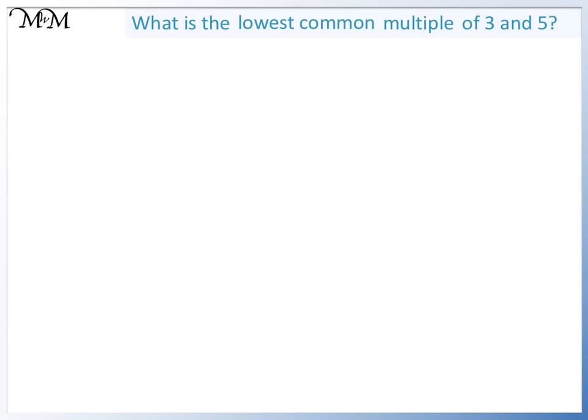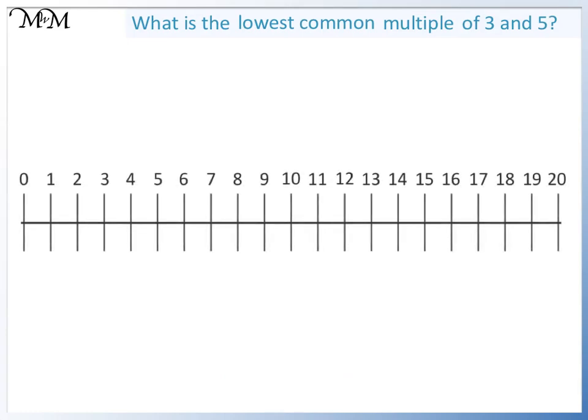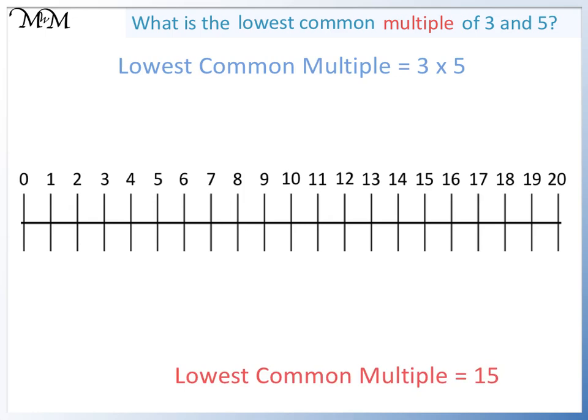What is the lowest common multiple of 3 and 5? 3 and 5 don't share any factors. There aren't any numbers that divide into both 3 and 5 apart from 1. So the lowest common multiple is the two numbers multiplied together. The lowest common multiple is 3 times 5, which is 15.